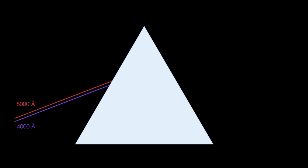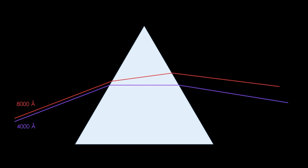We now have both these rays parallel to each other incident on the prism. We find that the red light is deviated by a lesser amount compared to violet light. The reason for this is that the velocity of violet light in glass is lesser than the velocity of red light in glass. Although both these colors travel with the same velocity in vacuum, in glass violet light travels with a lesser velocity, and that's the reason why violet light gets deviated by a greater amount.